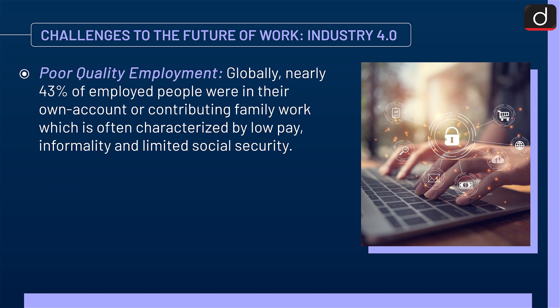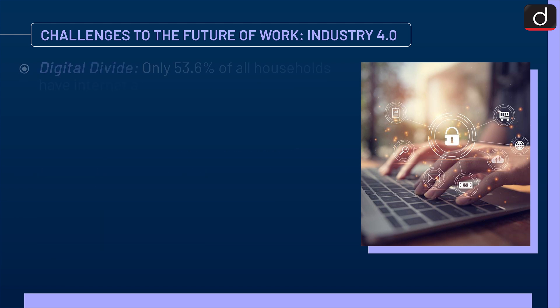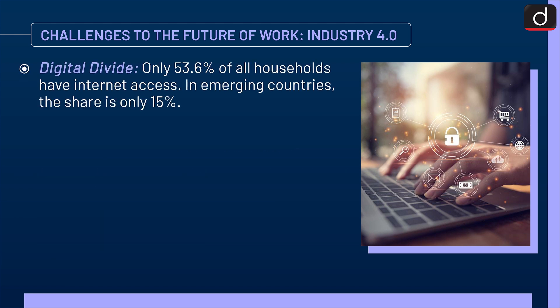Next is poor quality employment. Globally, nearly 43% of employed people were in own-account or contributing family work, which is often characterized by low pay, informality, and limited social security. Next is income inequality: the ILO observes that although workers have become increasingly productive, the benefits of their work have increasingly accrued to capital income and to those at the top of the income distribution. Next is the digital divide: only 53.6% of all households have internet access; in emerging countries, the share is only 15%.